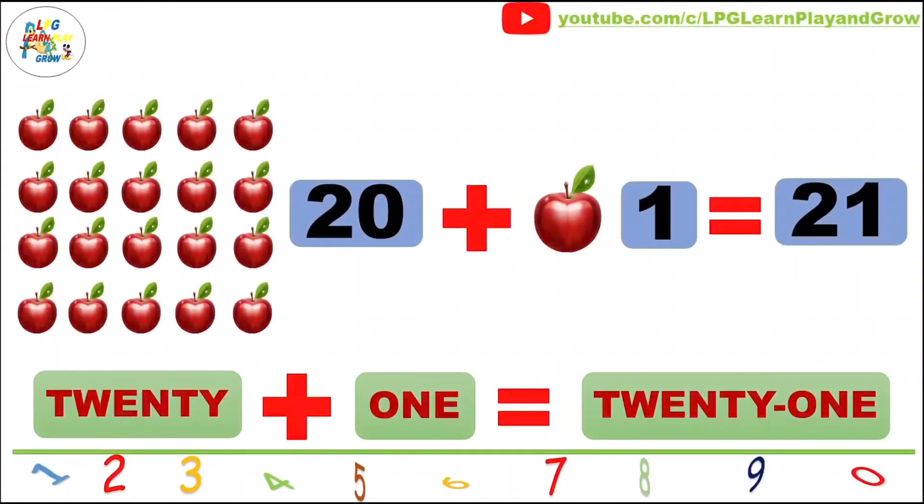Let's count apples. 1, 2, 3, 4, 5, 6, 7, 8, 9, 10, 11, 12, 13, 14, 15, 16, 17, 18, 19, 20. So, here we have 20 apples.